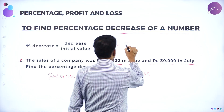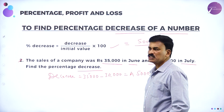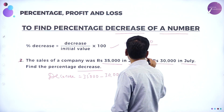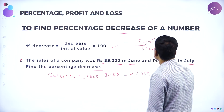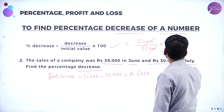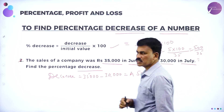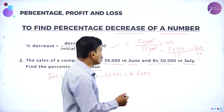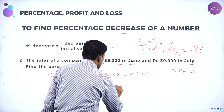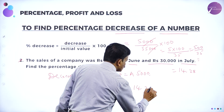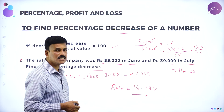The decrease in the amount is equal to 5,000. Now, the formula: percentage of decrease is equal to decrease, which is 5,000, divided by the initial amount of 35,000 into 100. The zeros get cancelled, leaving 5 into 100 divided by 35, that is 500 divided by 35. Simplifying this, the value is 14.28. Therefore, the percentage decrease is equal to 14.28 percent.